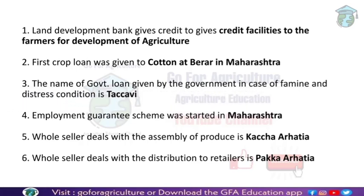Next question: the first crop loan was given to Kottan at Berar in Maharashtra. This first crop loan scheme was first recommended by the Rural Credit Survey Committee report in 1954. This is why they started giving crop loans mainly to cash crops, and the first crop loan was given at Berar in Maharashtra.